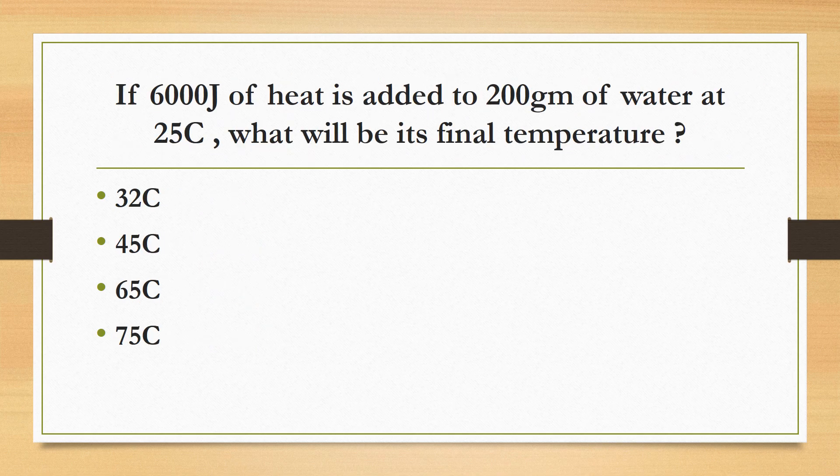If 6,000 J/kg°C is added to 200g of water at 25°C, what will be its final temperature? The correct answer is 32°C.